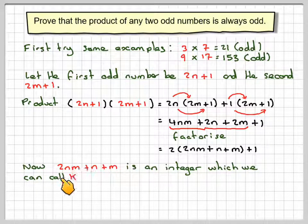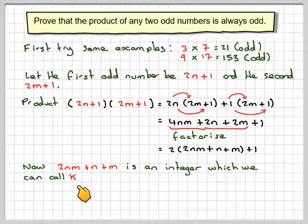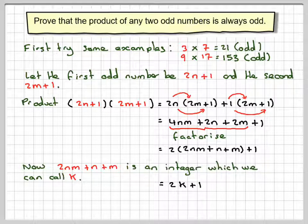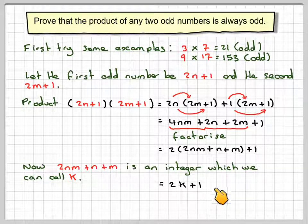So we can now call this a different value, k. So we'll call that all k, and therefore, this can be written as 2k plus 1, which is the format for an odd number.